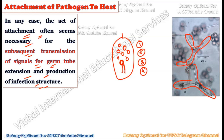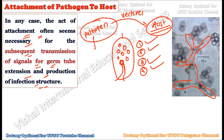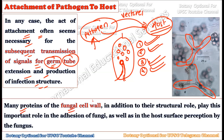After some signaling, the germ tube is formed, which will literally enter inside the plant. From the original location of the pathogen, they travel to the host plant using biotic or abiotic vectors, land on the plant, and use one of four methods to attach. After attachment, the next step is formation of the germ tube, from which the real infection begins.